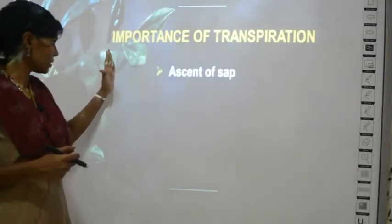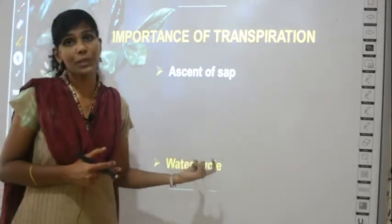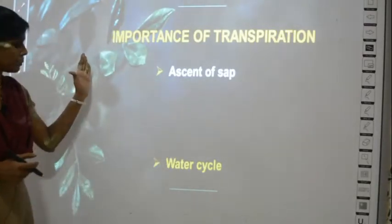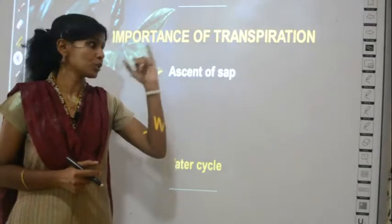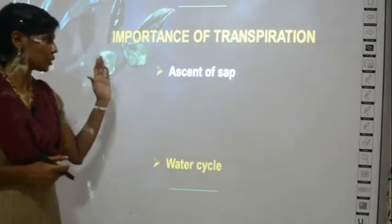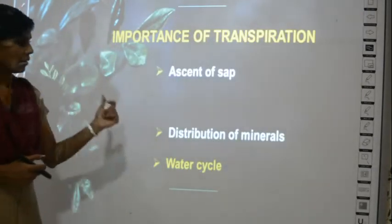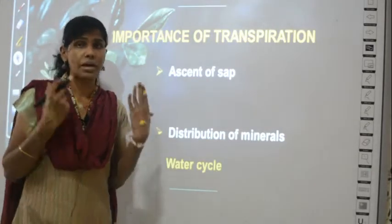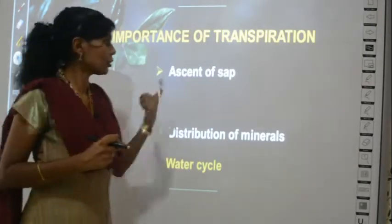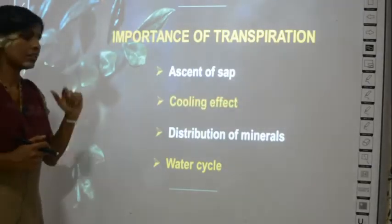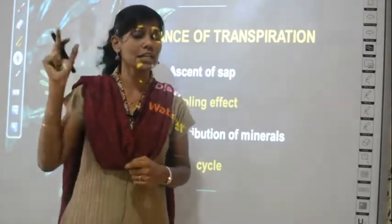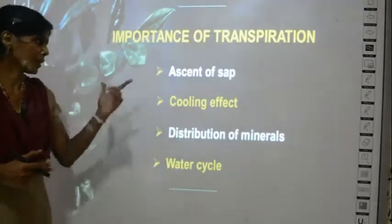The second use of transpiration is in the water cycle. The third use is for distribution of minerals throughout the plant. The fourth and last use is the cooling effect — because of transpiration the plant itself becomes very cool. We will learn about all four uses in detail.